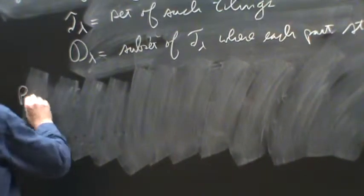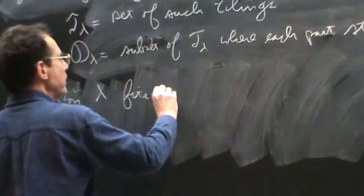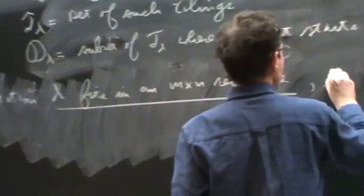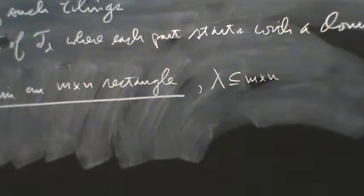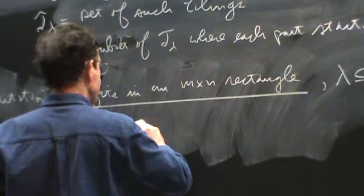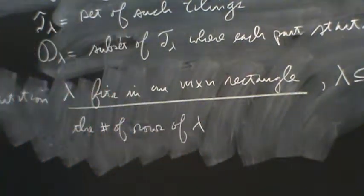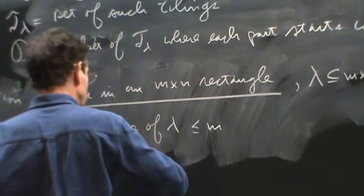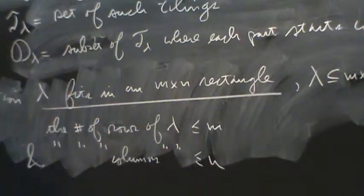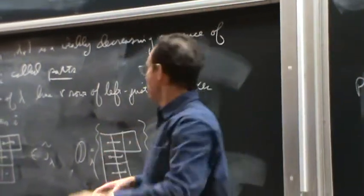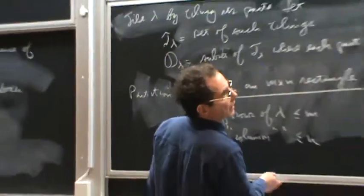And then there's one last set of definitions. So we say that partition lambda fits in an M by M rectangle. And we're going to write that as lambda is subset or equal to the M by M rectangle. If geometrically, the number of rows of lambda, and when I say that, I mean the number of rows of its Ferrers diagram, of course, is less than or equal to the first dimension M, and the number of columns is at most M. And again, geometrically, that just means that if I were to draw the Ferrers diagram of that rectangle, lambda would conveniently sit in the upper left-hand corner.